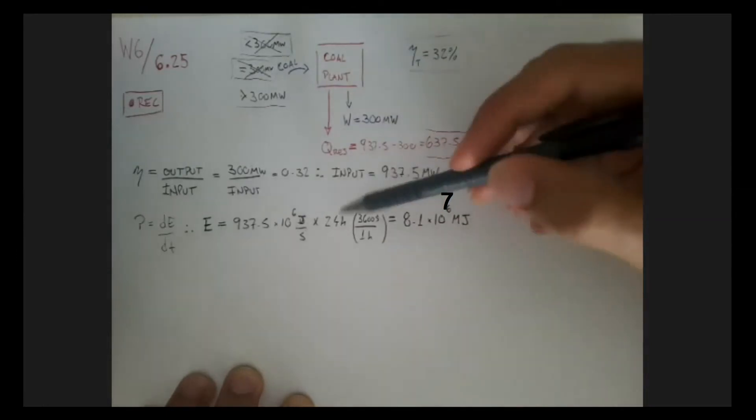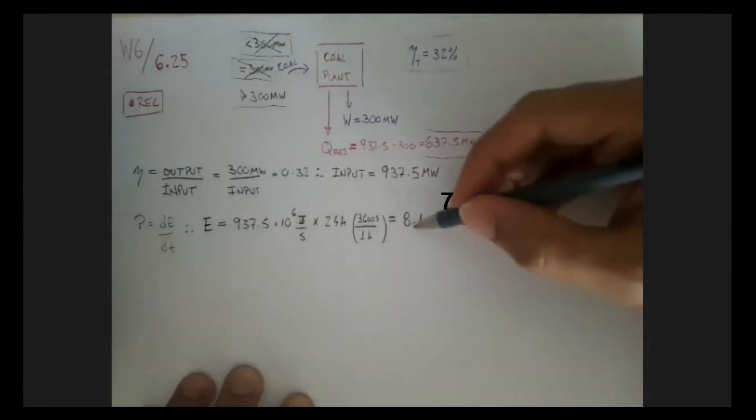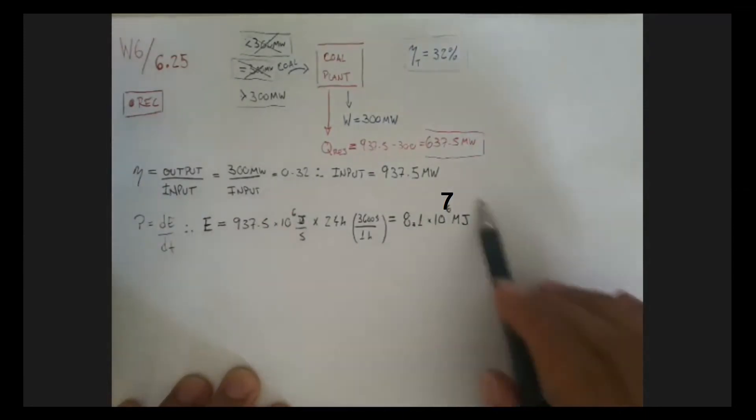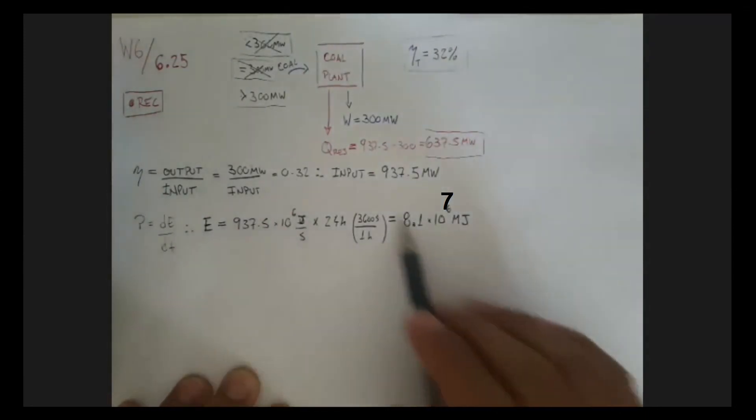I'm going to go ahead and do 8.1 times 10 to the 7, and that's megajoules. I'm multiplying by this big number here. So it's a lot of energy that I need to input to this system. 8.1 times 10 to the 7 megajoules. And now we need to convert this energy, this is the amount of energy we have to put into the system, into coal.